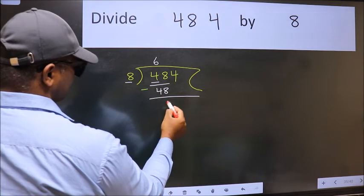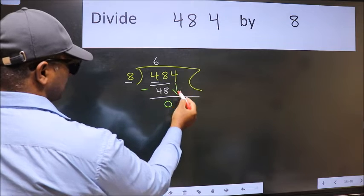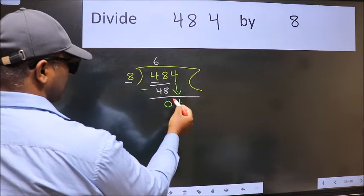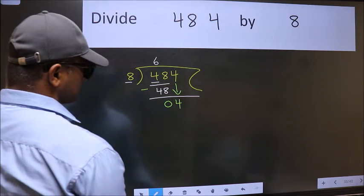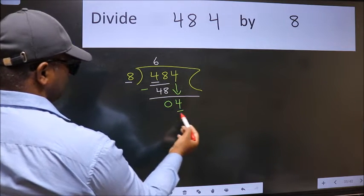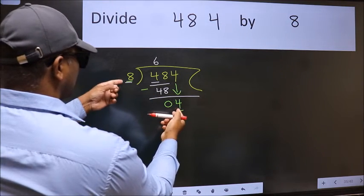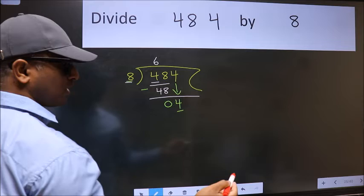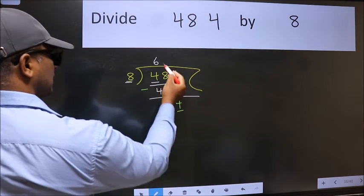After this, bring down the beside number, so 4 down. After this step, the mistake happens. The mistake is this: here we have 4 and here 8. 4 is smaller than 8, so what many do is they directly put dot, take 0.